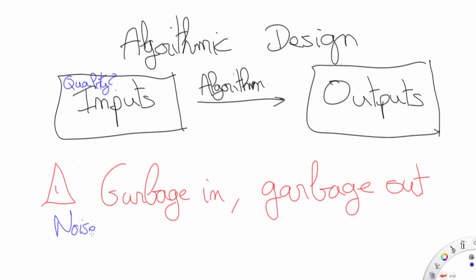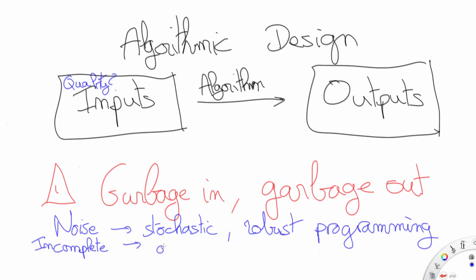Most notably is noise. There is plenty of research around this theme like stochastic or robust programming. Another deficiency of inputs could be incompleteness, which may be dealt with by online learning or optimization.